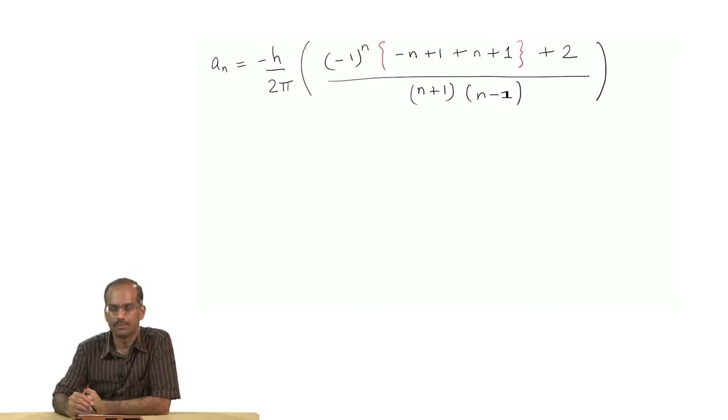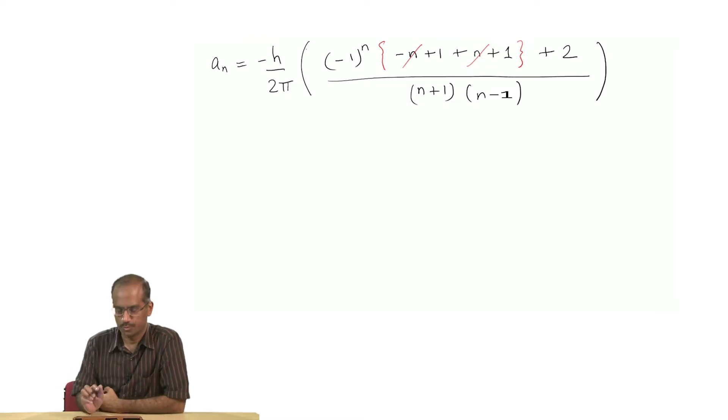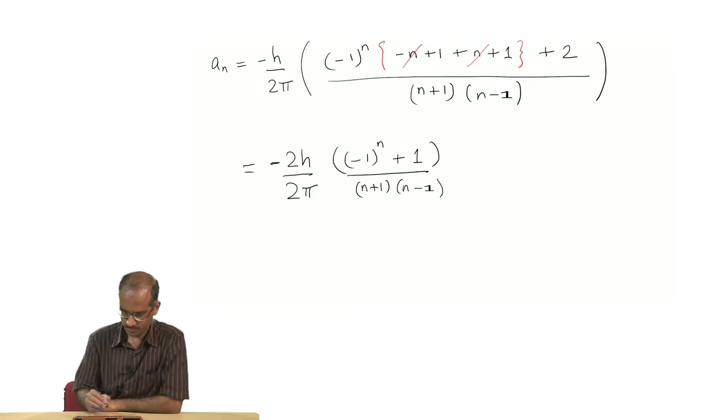Again you will notice that n and -n will cancel out here and then it is simply 2 in the numerator that multiplies (-1)^n. The entire 2 can be taken out. Now I have this final expression for a_n which will be -h by π into (-1)^(n+1) divided by (n+1) into n.